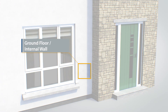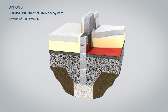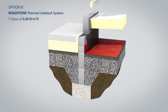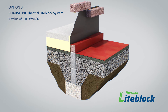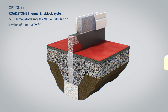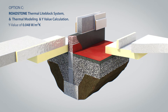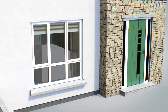Detail 2 is the junction of the ground floor and internal wall. Option A shows a standard concrete block construction having a thermal bridge giving a Y-Value of 0.15. Option B shows Roadstone thermal light block being used — two 100mm thermal light soap bars — allowing the builder to take a Y-Value of 0.08. In Option C, the builder avails of Roadstone's Y-Value calculation service to get a Y-Value of 0.048, thereby allowing a reduction in the thickness of insulation in the floor while still maintaining the A2 BER rating.